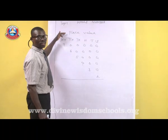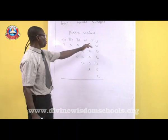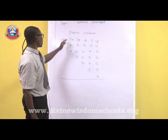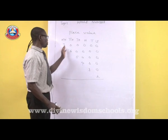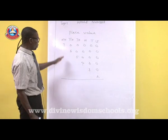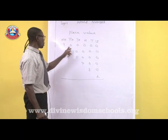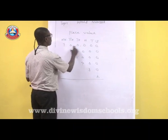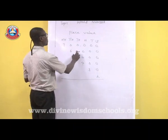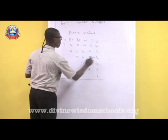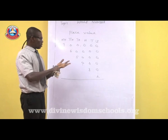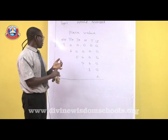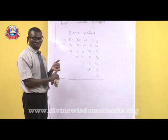Let's also look at the place value system. We have units, tens, hundreds, thousands, tens of thousands, hundreds of thousands, and so on to the left. For example, with the digits 7, 0, 0, 0, 0, 0 — that becomes 700,000. Then 60,000 and 5,000, giving 700,000 plus 60,000 plus 5,000 equals 765,000 altogether.